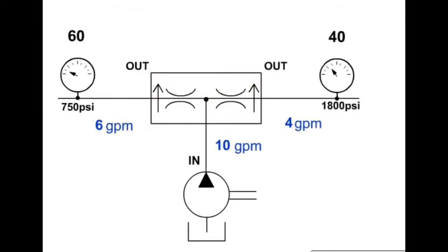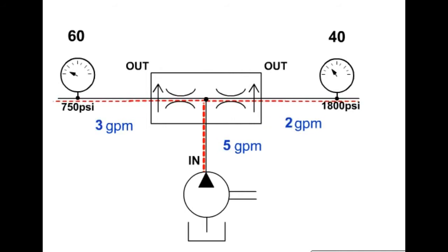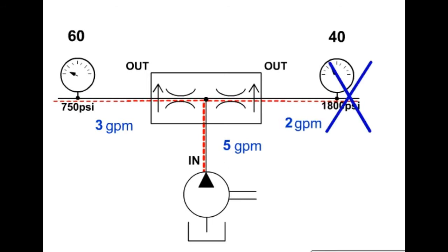Both output flow paths are pressure compensated, so the flow division will remain constant even with varying loads and pressure in two circuits. If the input flow varies, the output flows will vary proportionally. If one of the output flows is blocked, the divider will block the other output flow.